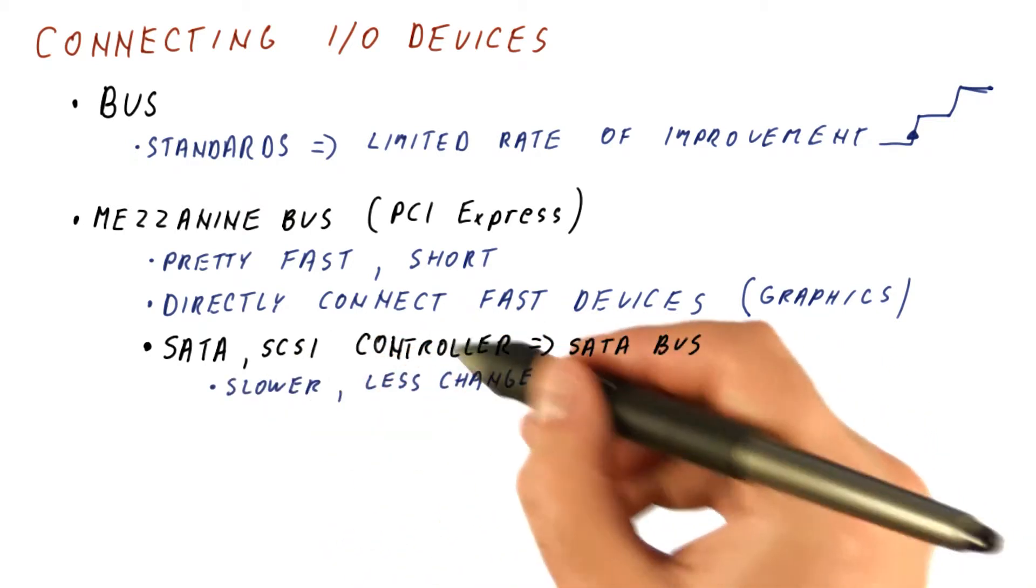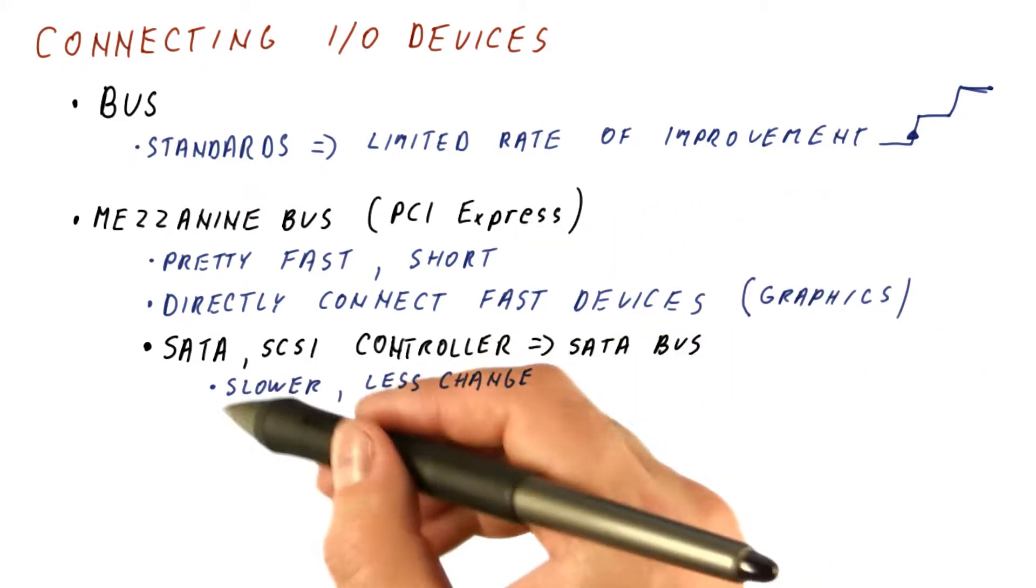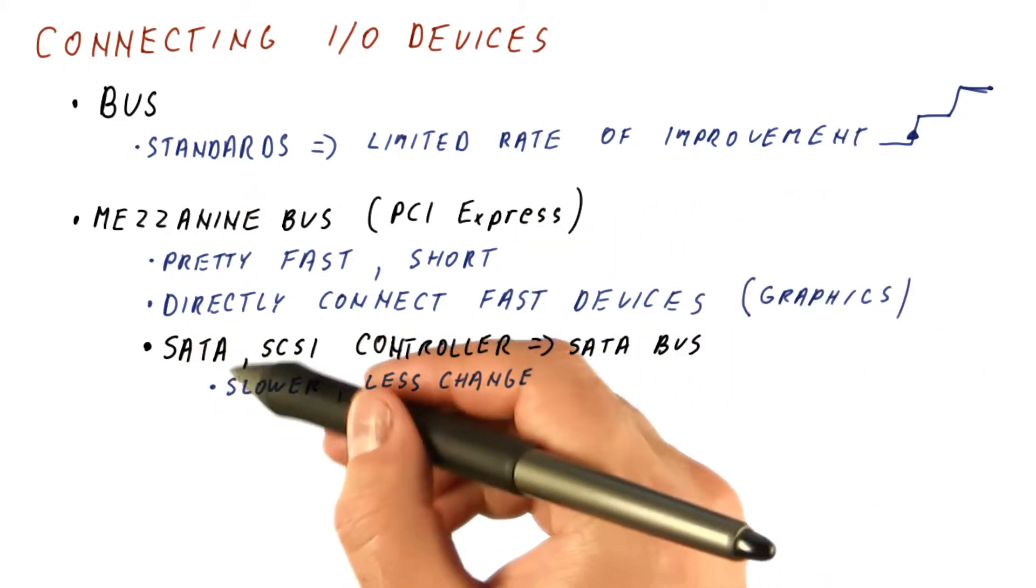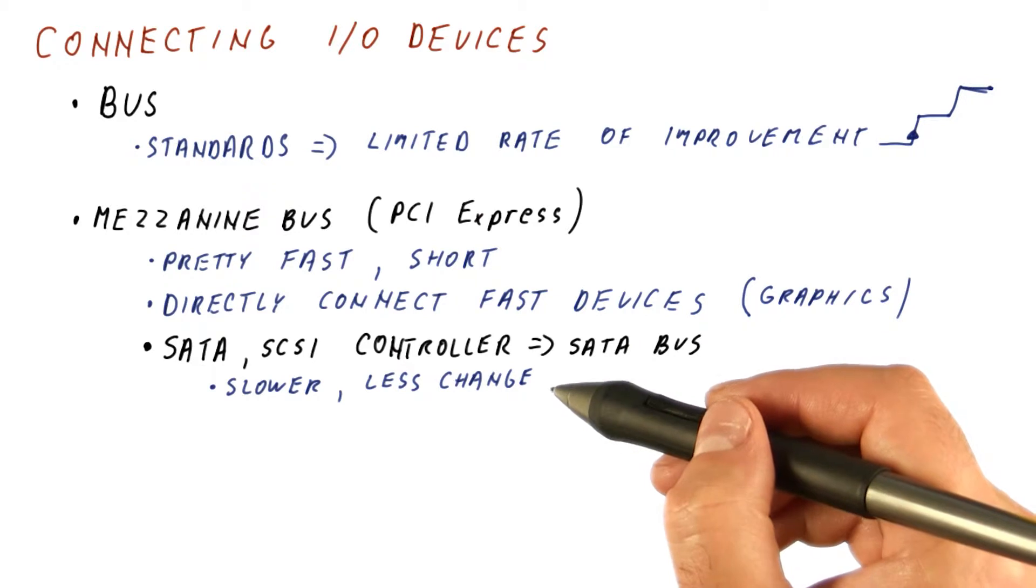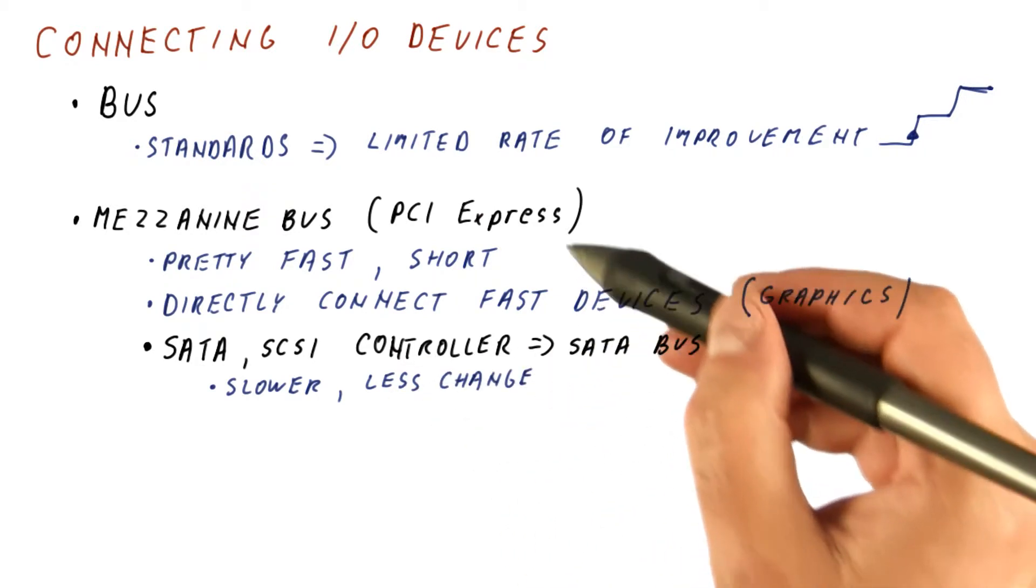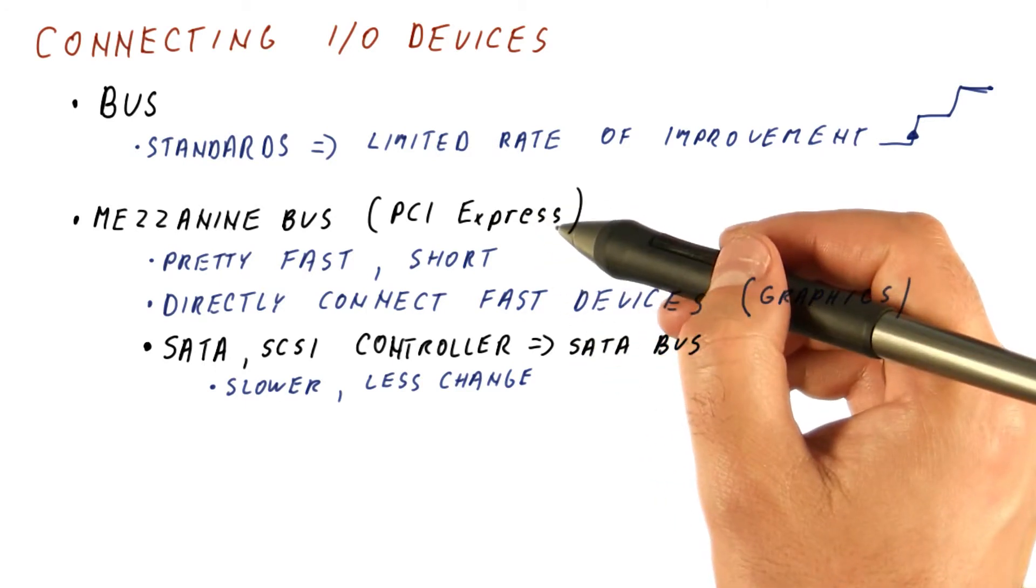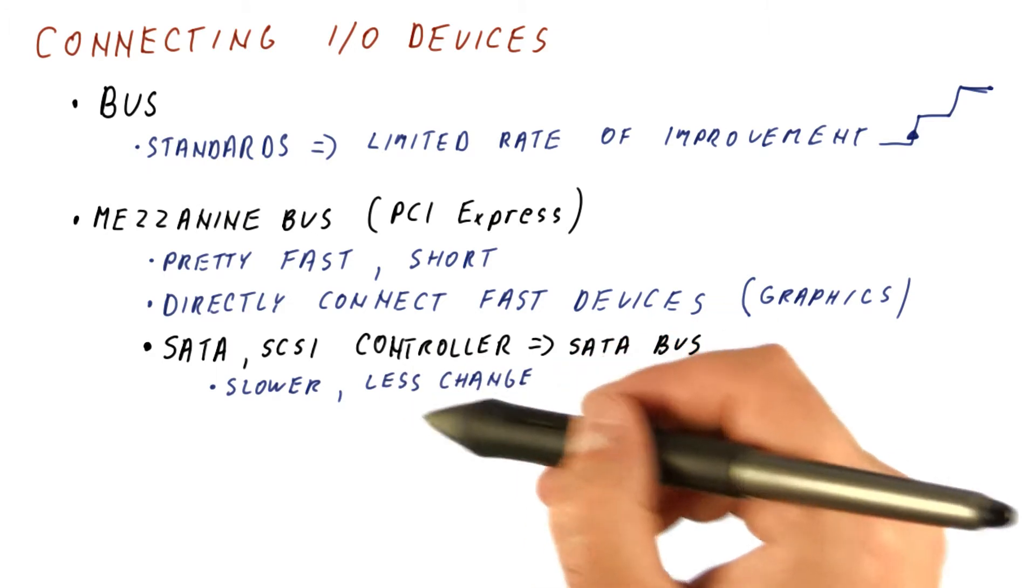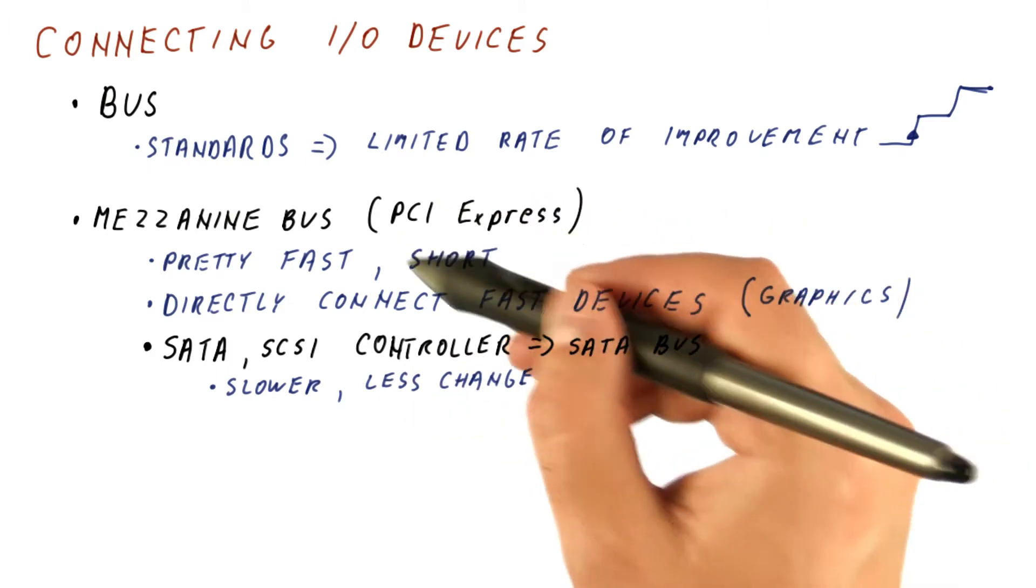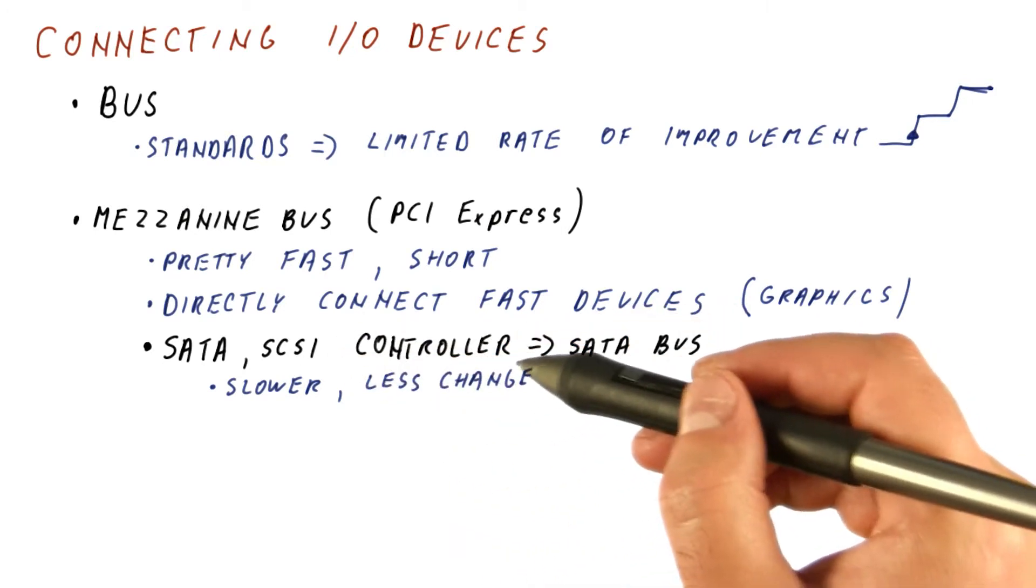The reason we don't directly connect our hard drives to PCI Express is that although serial ATA buses are slower, there is less change in their standards. These devices are much slower than what PCI Express can provide, so we don't need all that speed. In exchange, we get to keep our hard drive standards longer, while PCI Express can improve more rapidly. All we have to do is devise new controllers that connect these storage buses to the newest PCI Express.